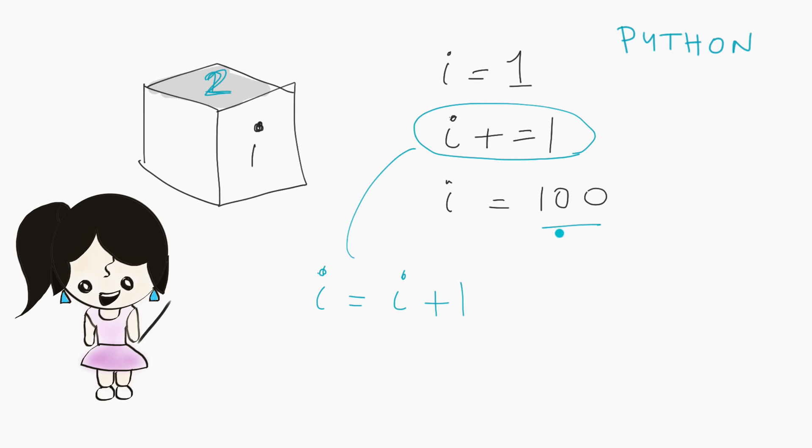Now what happens when you do i equals to 100? Exactly. This box will contain 100. So I'm just going to rub that, erase this, and put in 100. Okay? So this box, i, contains 100 right now. Hopefully that makes sense.